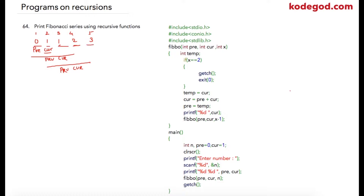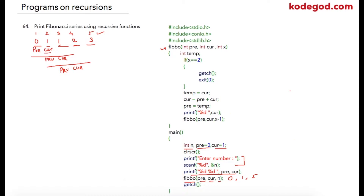Skipping the first two numbers will require three iterations to print the Fibonacci series up to five levels. In the program, I have initialized 'pre' equal to zero and 'current' equal to one, and declared one variable 'n' for the user's input. Because we already know the first two numbers are always zero and one, I am directly printing them. After that, I am calling my function, passing the current value of previous, current, and n — which is five. So in the first call, zero, one, and five will be sent to our function.